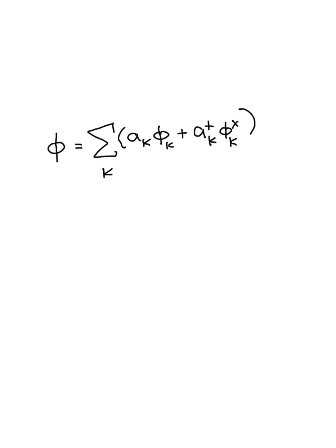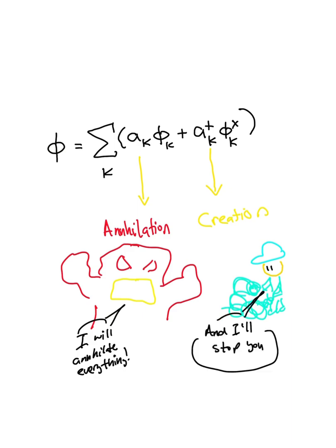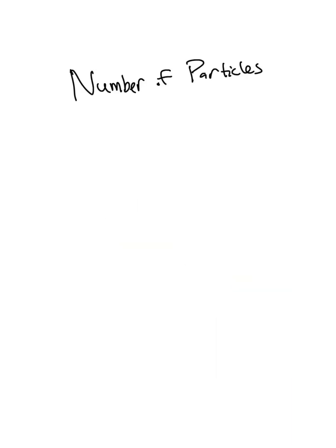The coefficients in front of our plane waves have special names, by the way. They're called the annihilation and creation operators, respectively. It turns out that these operators help tell us the number of particles in our system.